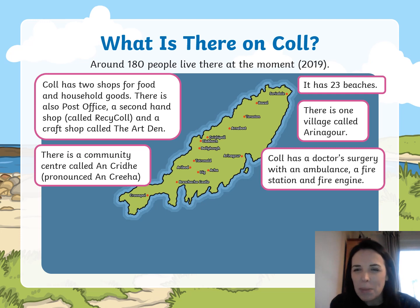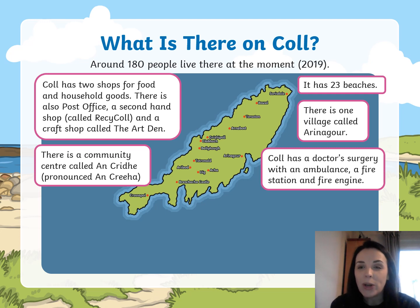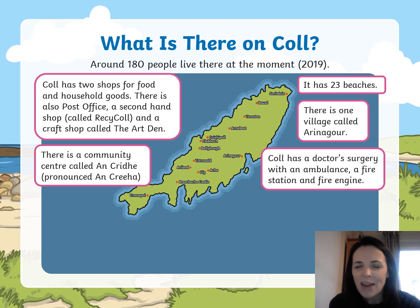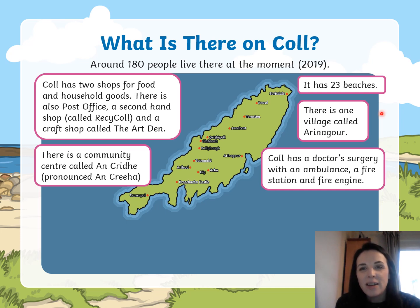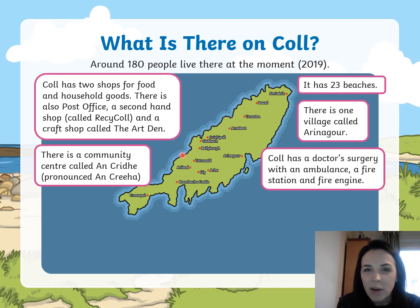It has 23 beaches. Why has it got so many beaches? Have a look at the island — maybe pause the video and have a think. Well, it has more beaches because it's got more coastline. The coastline is the line where the sea meets the land, and on an island it's just got more coastline. I wonder if those beaches are sandy or perhaps have shingle on them.